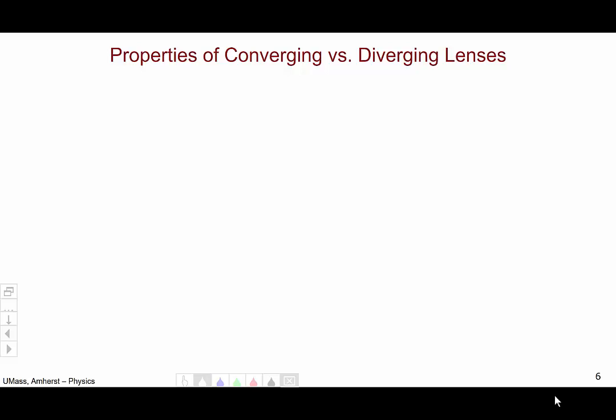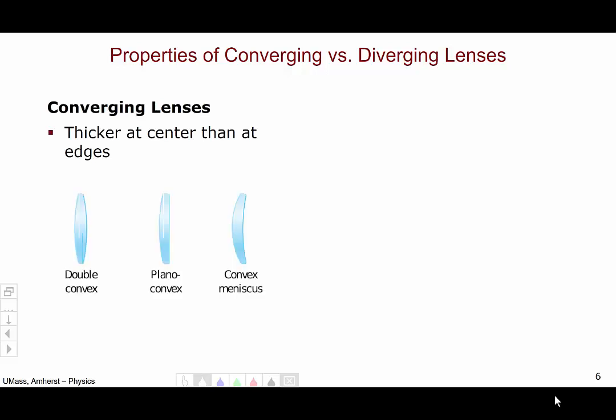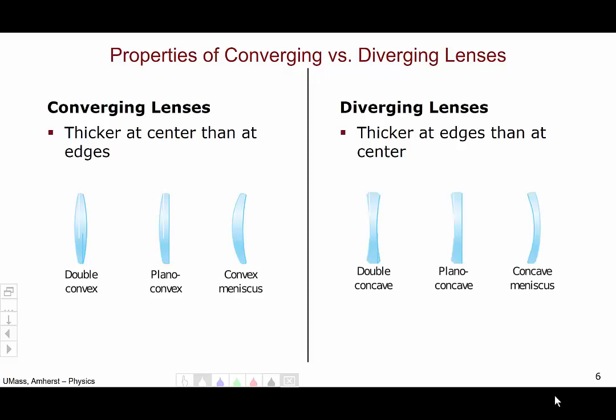Let's talk a little bit about the properties of converging versus diverging lenses. Converging lenses are always thicker at the center than at the edges. So, any lens that is thicker in the middle than near the edges will be converging.